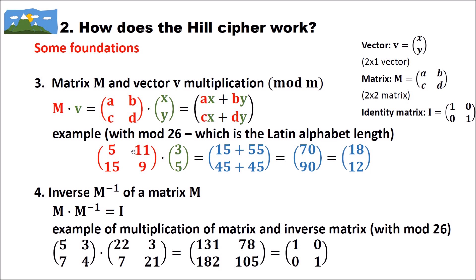For the second element: C=15, X=3 gives 45, and D=9, Y=5 gives 45. Adding gives the vector (70, 90). Then we calculate modulus: 70 mod 26 is 18, and 90 mod 26 is 12. So our end vector is (18, 12).